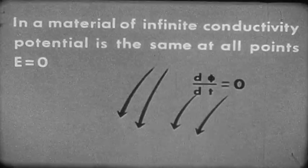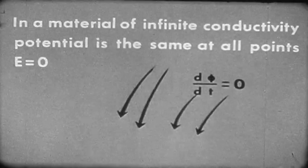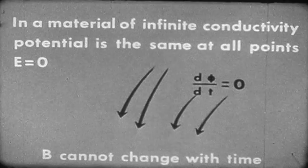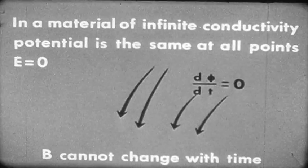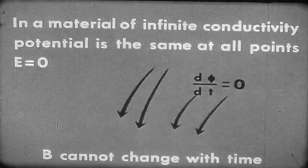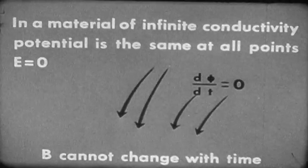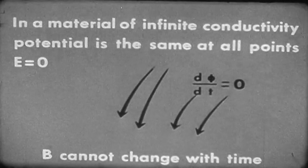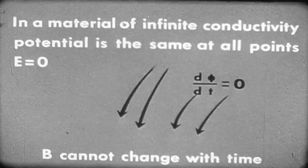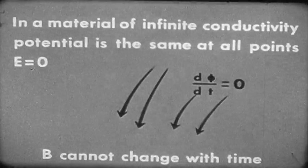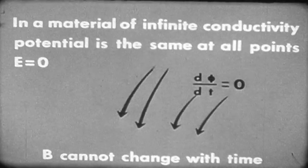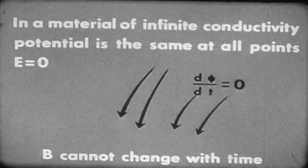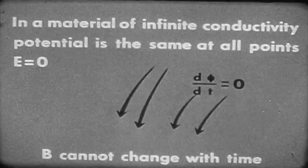To put it succinctly, the magnetic flux density cannot change with time in a material of infinite conductivity. Any magnetic flux which resides in it while it has infinite conductivity is frozen to it as long as it has infinite conductivity.